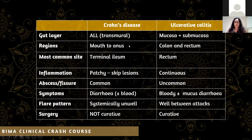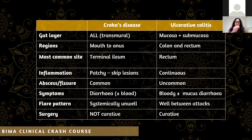Looking at the comparison table: Crohn's affects all gut layers, whereas UC affects just the mucosa and submucosa. Crohn's can affect anywhere from the mouth to the anus, but commonly the terminal ileum, and importantly it's patchy inflammation - you get skip lesions where one area is affected and the next isn't. In contrast, UC usually affects the colon and rectum, specifically the rectum, and it is continuous with no skip lesions.